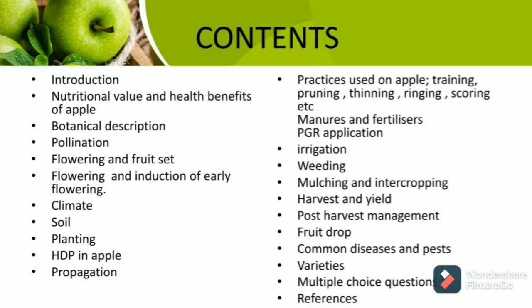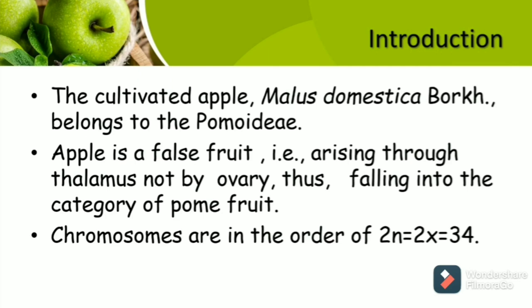The contents of our presentation are as follows, starting with the introduction. The cultivated apple, Malus domestica, belongs to the family Rosaceae or Pomodeae. Apple is a false fruit, that is, it arises through the thalamus, not by ovary, thus falling into the category of pome fruit. Apple is a diploid and has 34 chromosomes in total. The health benefits and nutritional value of apple are given as follows.